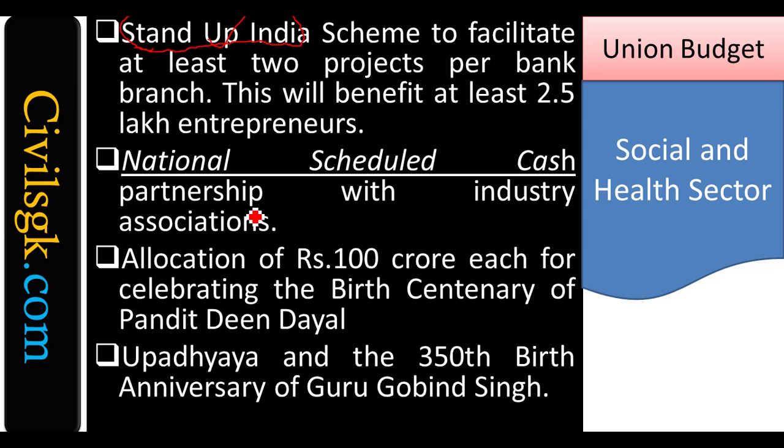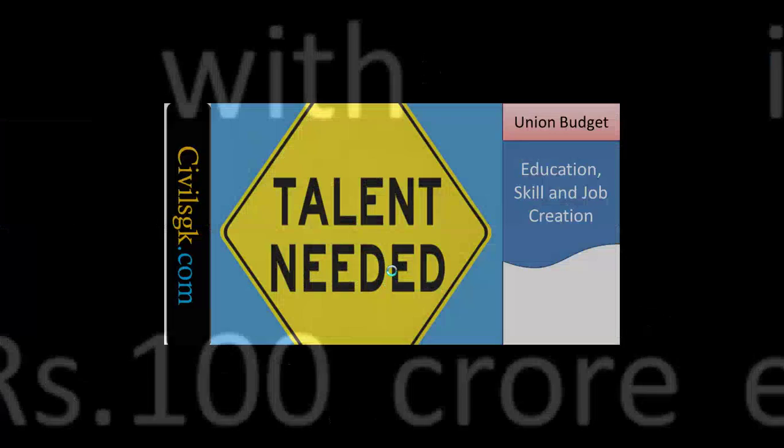National Scheduled Caste Partnership scheme comes into picture for associations — when cash needs to be transferred to industries, an industry association is associated to make it easy. On the birth centenary of Pandit Deen Dayal Upadhyaya and the 350th birth anniversary of Guru Gobind Singh, ₹100 crores was allocated.